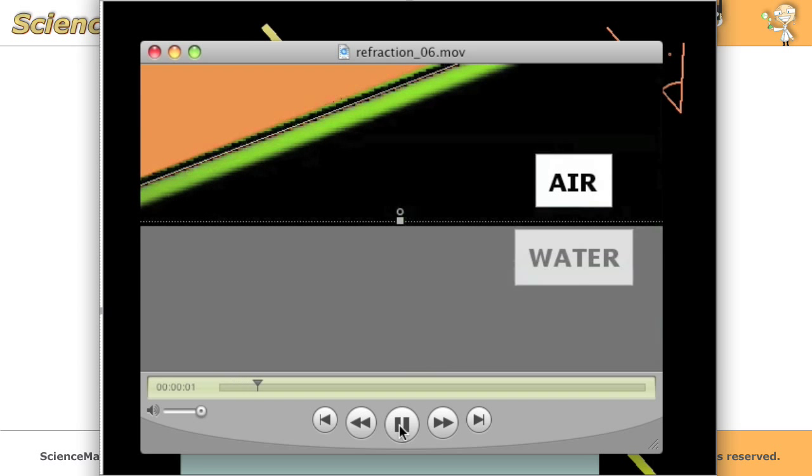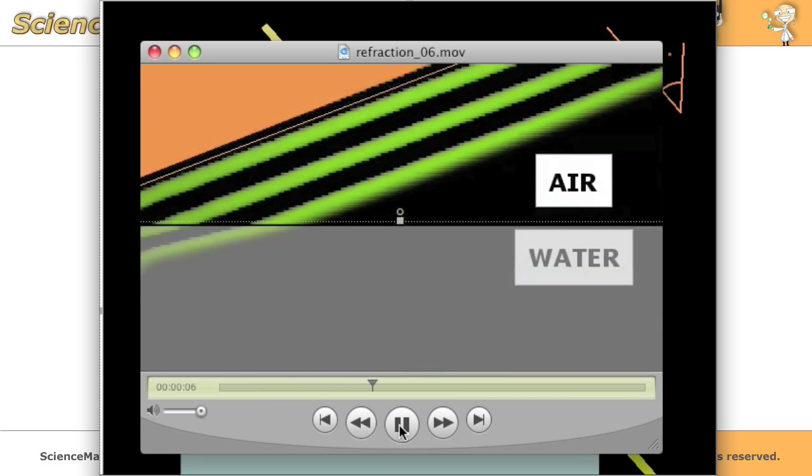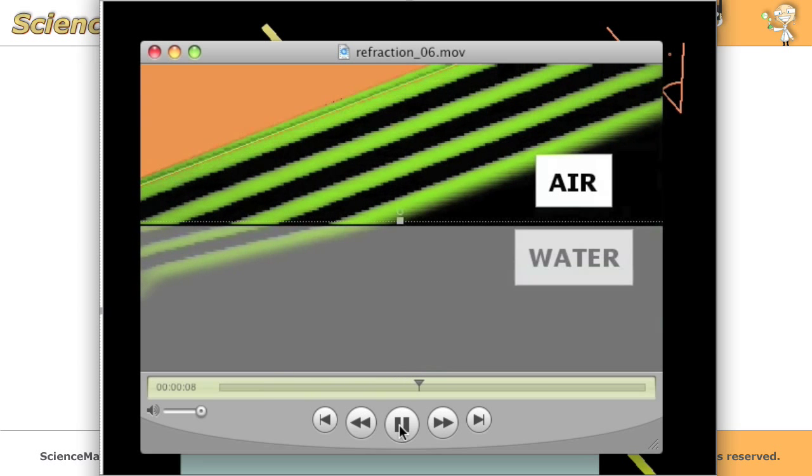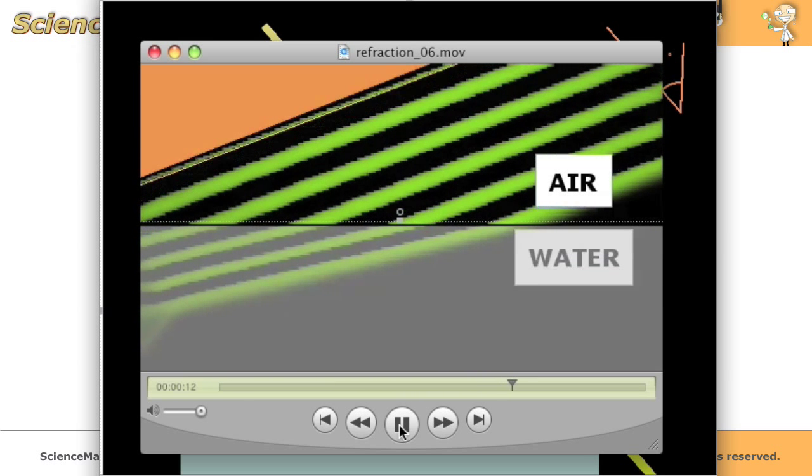For instance, in this case, a wavefront is striking a medium boundary of air and water. When the wavefront hits that medium boundary, the wavefront bends.